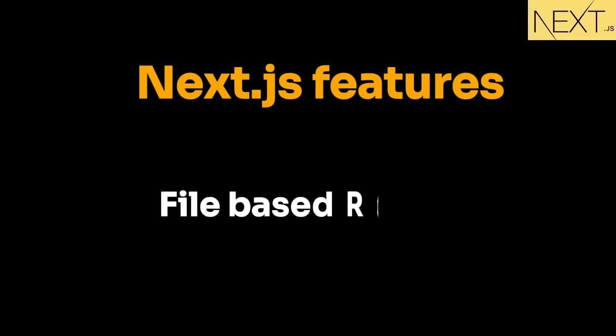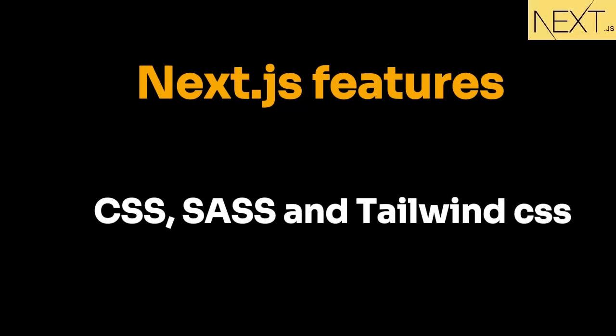The next feature is routing. Next.js simplifies routing by providing file-based routing. We don't need to write any additional routing logic or code. Based on the name of the file we create in the application, the route is automatically created internally without writing any routing code. This is one of the biggest advantages — no need to write routing logic, it is provided automatically based on the file name. All we need to focus on is the file naming convention for the route.